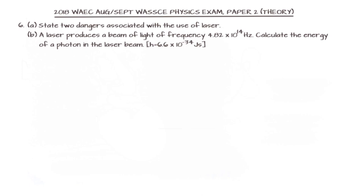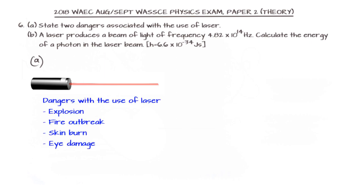This question asks about the dangers associated with the use of a laser. A laser is a device that shoots monochromatic light of high intensity, which can be dangerous if not handled properly. Some of the dangers include explosion, fire outbreak, burning the skin, and if exposed directly to the eye, it can cause eye damage. We should always be careful when handling lasers.